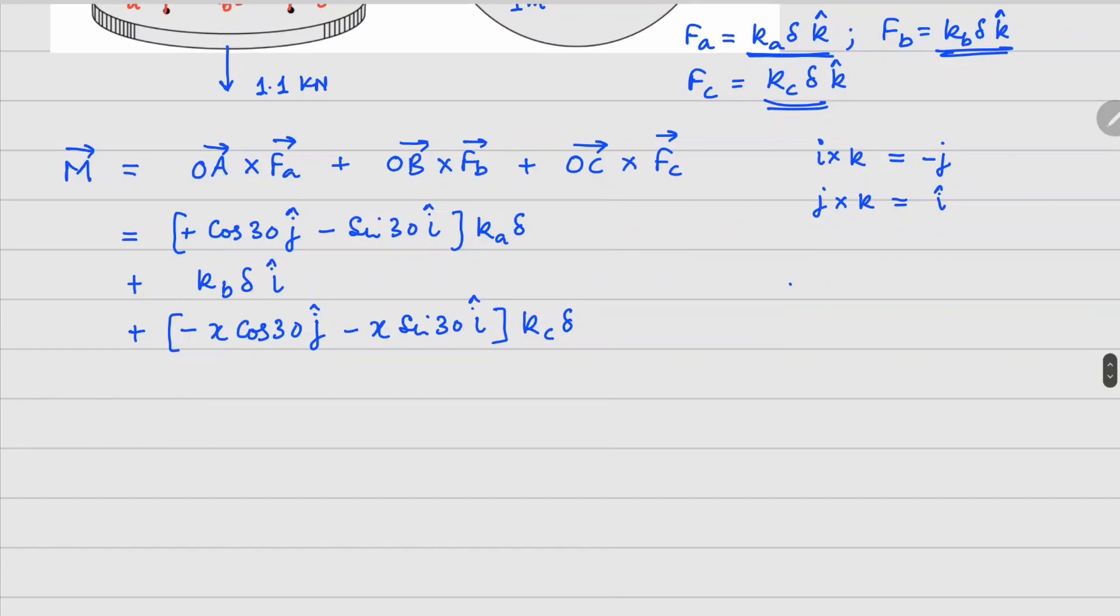So from this we can check your j cap term here, and by doing so we can write ka times delta times cos 30 will be equals to x cos 30 times kc delta. So delta cancels out, cos 30 cancels out. From here we can find your x is ka divided by kc.